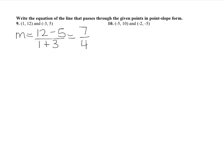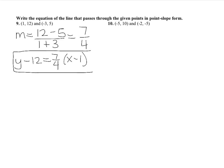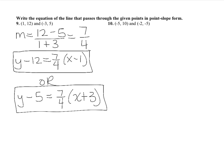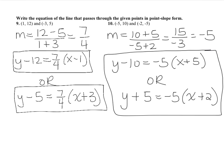You have two options — you can use either ordered pair to write the form. One option: y minus 12 equals 7 fourths times (x minus 1). The other option: y minus 5 equals 7 fourths times (x minus negative 3), which becomes x plus 3. You only need to give one form. If you put both into slope-intercept form, you'd find the slope and y-intercept are the same. Try number 10 on your own.